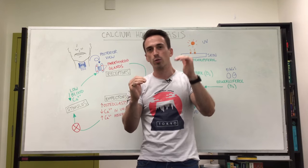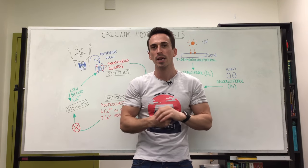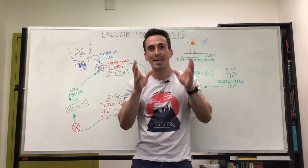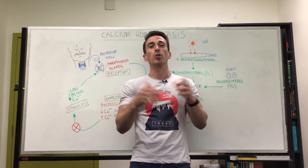So it's very important that we maintain a very tightly regulated amount of calcium in our bloodstream. In order to control this, we have something called calcium homeostasis and a number of hormones are involved in this process. So let's take a quick look at it.